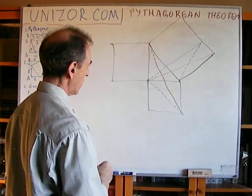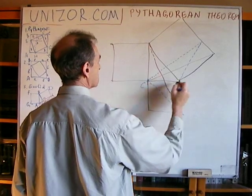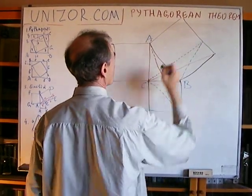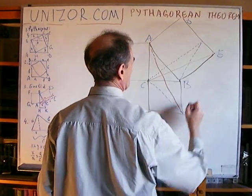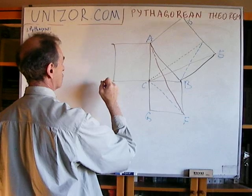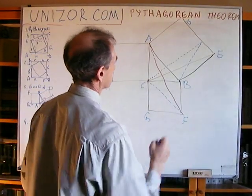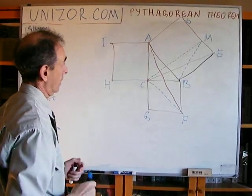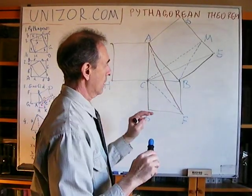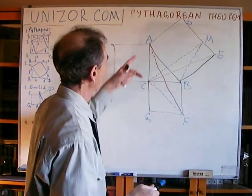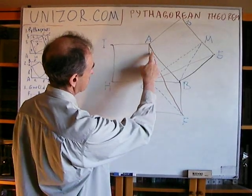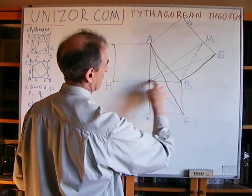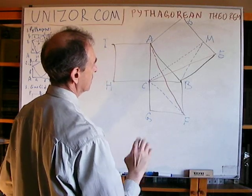Now consider two triangles whose congruence I'm going to use: triangle A, B, F and triangle E, C, B. They look the same, and it's very easy to prove that they are congruent. If you turn triangle A, B, F by 90 degrees into this position — point A will go to E, because this is a 90-degree square and A,B and B,E are of equal length. Since this side is perpendicular and equal to this one, F will go to C. So when we rotate around point B, triangle A, B, F takes position E, B, C — these triangles are congruent.